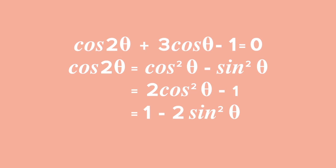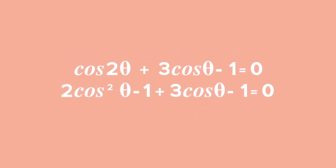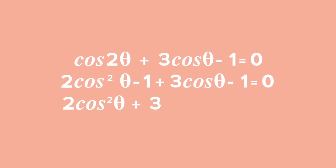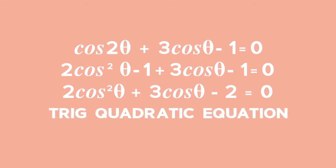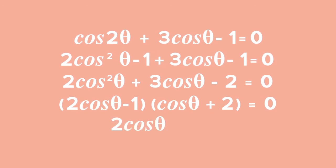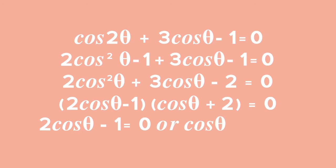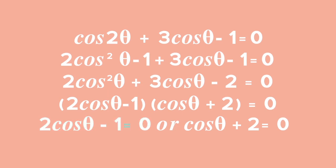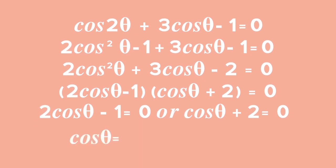Since the middle term is in terms of cosine, choose the cos 2 theta expansion that keeps the equation in terms of cosine. Hence, change cos 2 theta to 2 cos squared theta minus 1. Adding like terms, we get 2 cos squared theta plus 3 cos theta minus 2 equals 0. This is a trig quadratic equation. The two factors are (2 cos theta minus 1) and (cos theta plus 2). From 2 cos theta minus 1 equals 0, we get cos theta equals 1 half.